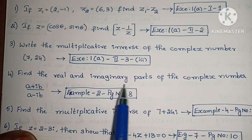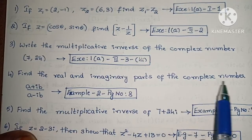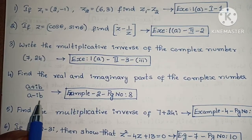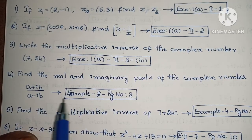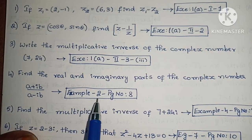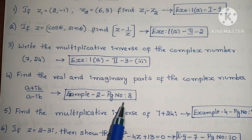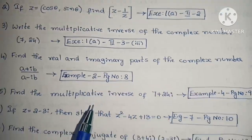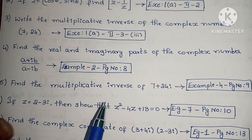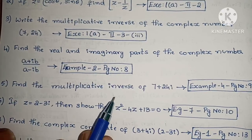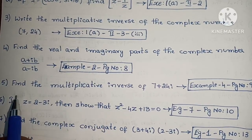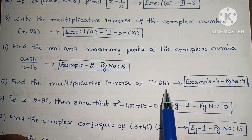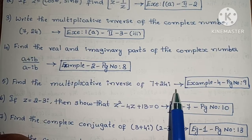Find the real and imaginary parts of the complex number (a + ib) / (a - ib). This is Example 2, page number 8. Next, find the multiplicative inverse of 7 plus 24i. Example 4, page number 9.